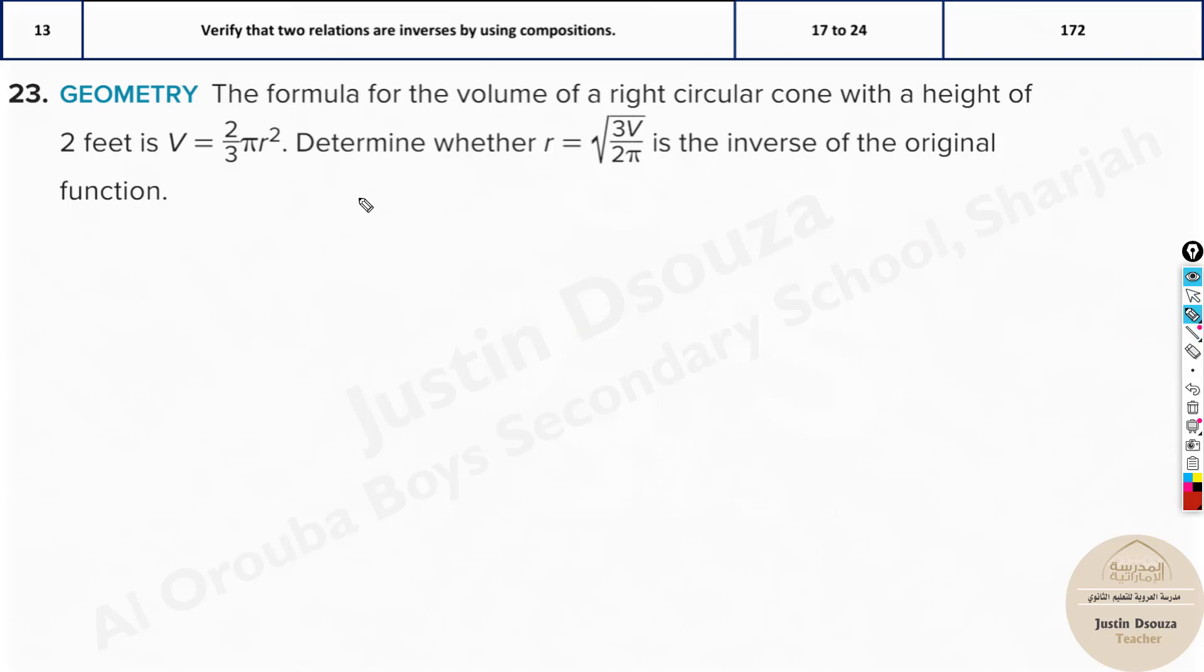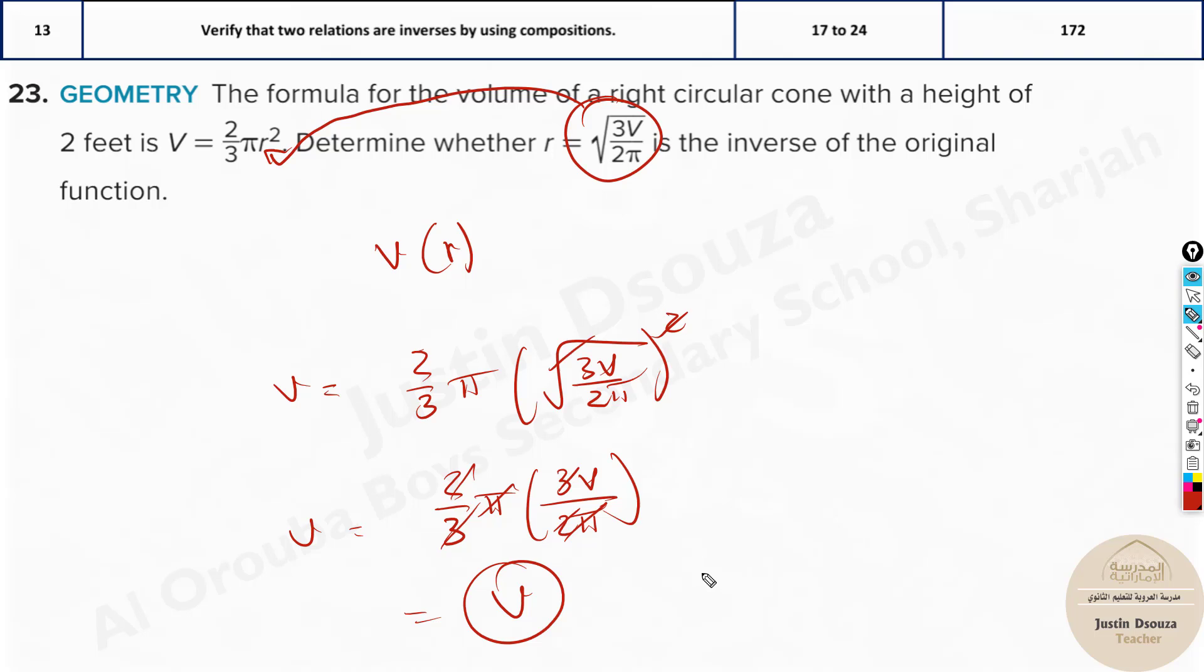Now we have a formula problem. The formula for the volume of a right circular cone with a height of 2 feet is given over here. Determine whether r, the radius, is the inverse of the original function. Imagine v of r we have to take. Let us solve it. Whatever is this, put it in this r and solve. It'll be 2/3 pi. Instead of r I have square root 3v/2π squared. The square and square root cancels. You are remaining with 2/3 pi, and over here it is 3v/2π. So 2 and pi cancels, 3 cancels. What are you getting? We started with v. Yes, it is just v. This is inverse.